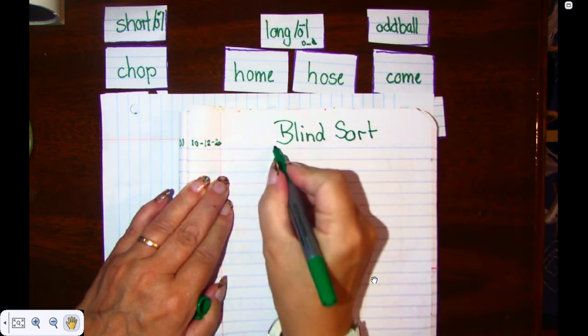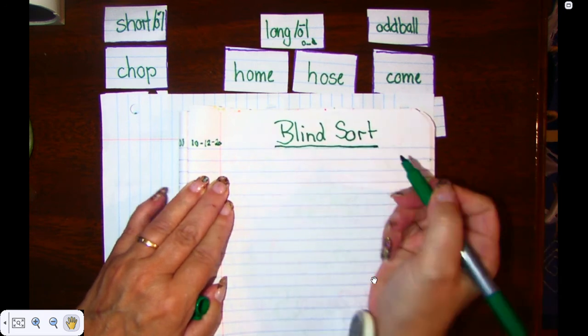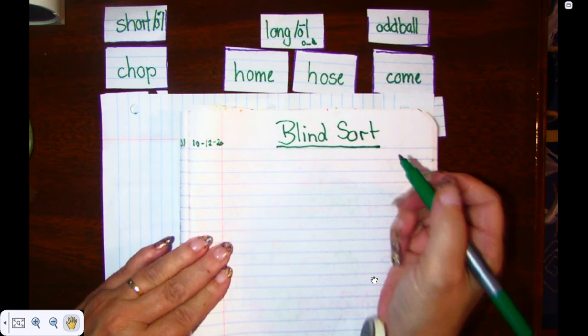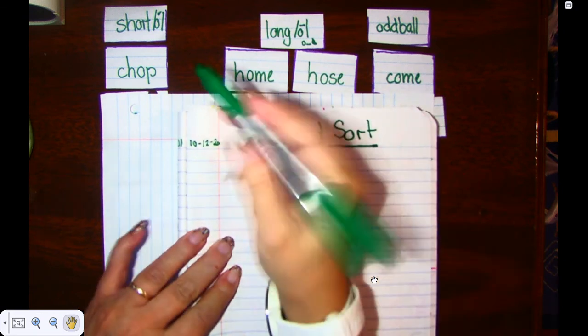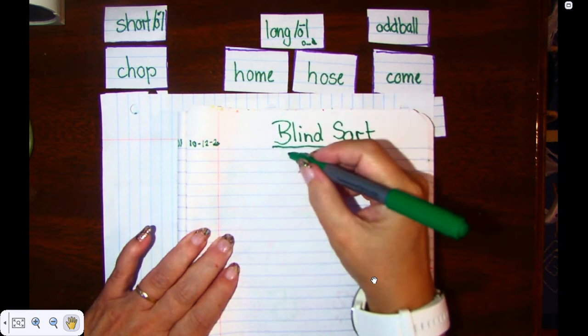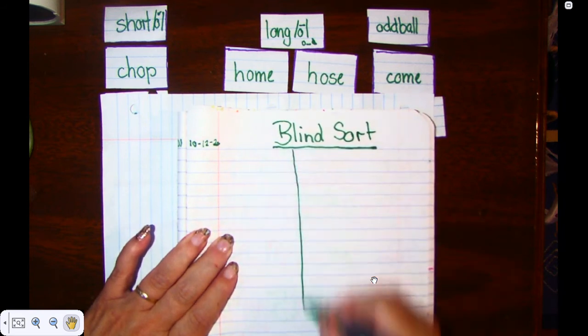And on my blind sort, since that is my title, I need to make sure that both words are capitalized because titles are capital letters. So today we have three columns, so I need to draw my three columns.